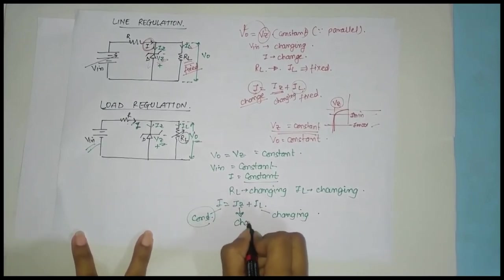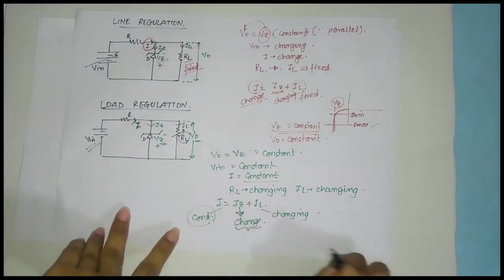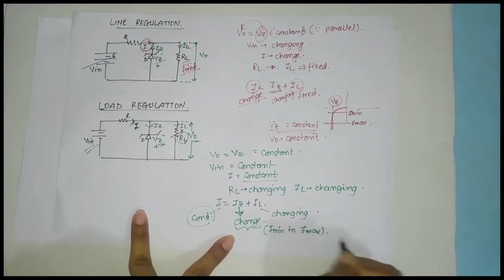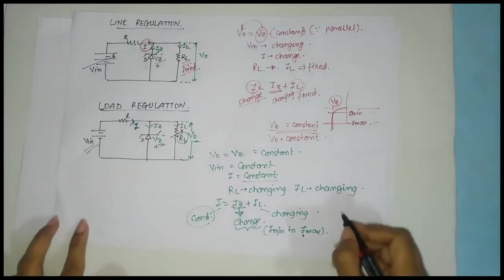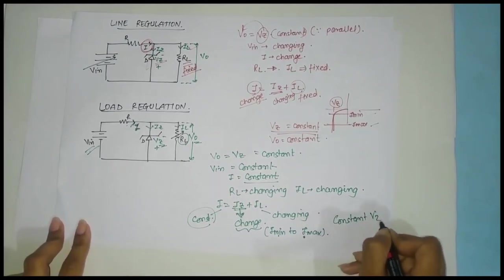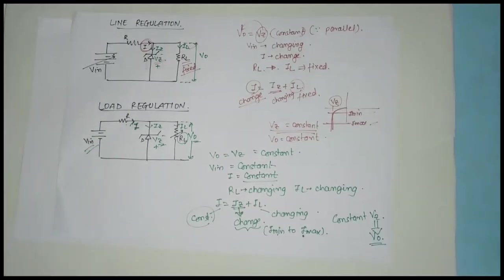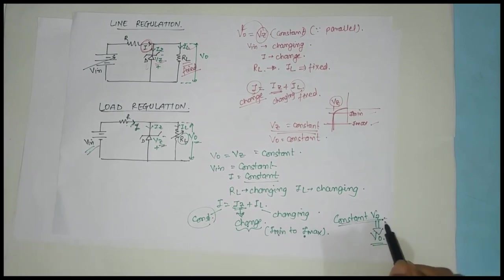So finally, IZ's value must vary to satisfy the condition. IZ's value should change such that it varies from I-minimum to I-maximum. If IZ varies between I-minimum and I-maximum, we will get a constant VZ. And constant VZ means we get a constant output. So even though we change the value of resistance from no load to full load, if IZ's value varies from I-minimum to I-maximum, our VZ will be constant, and since VZ equals V-out, our output will be constant.